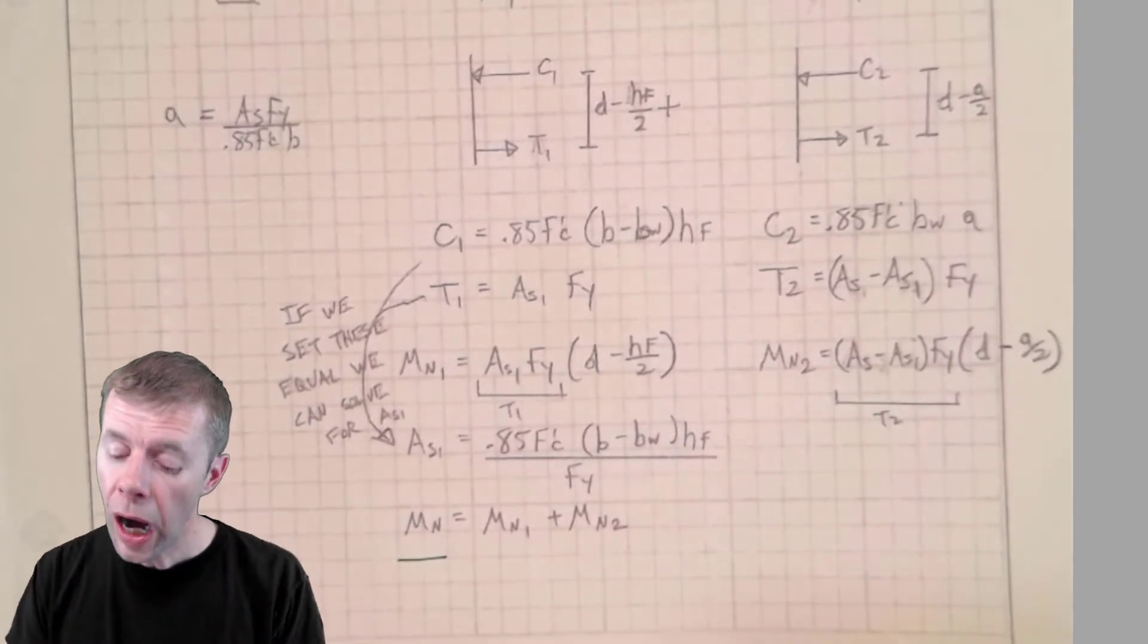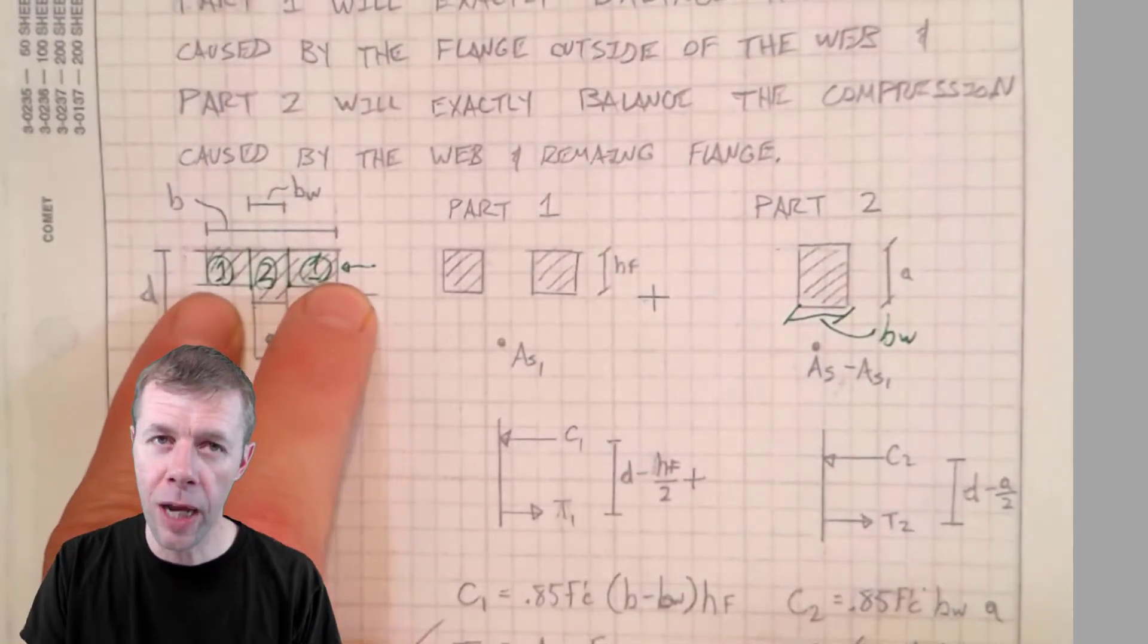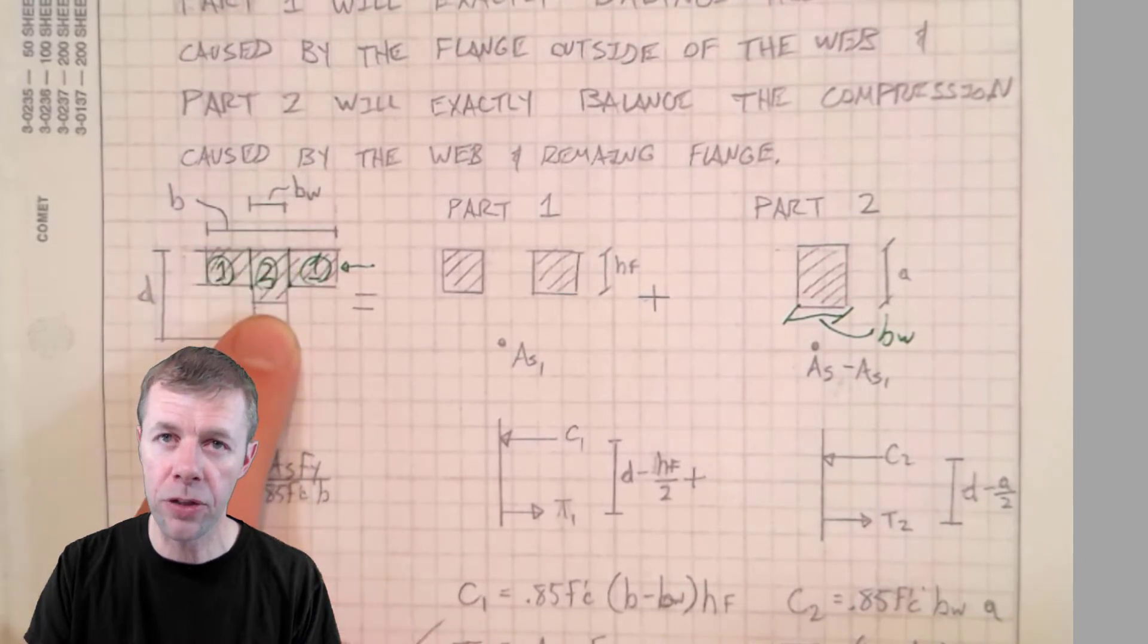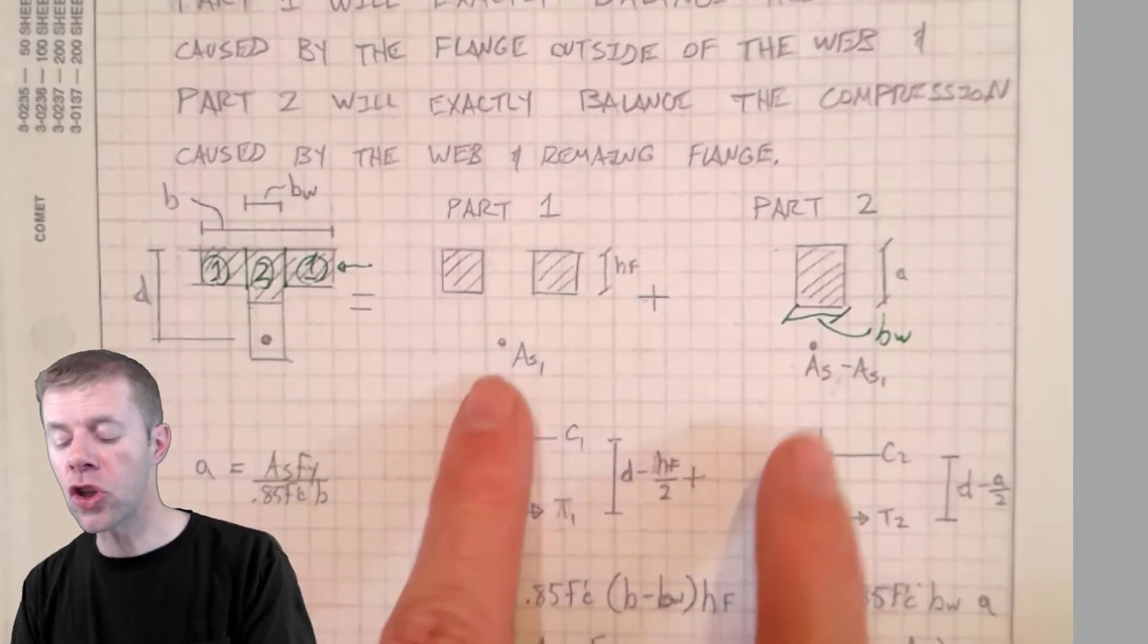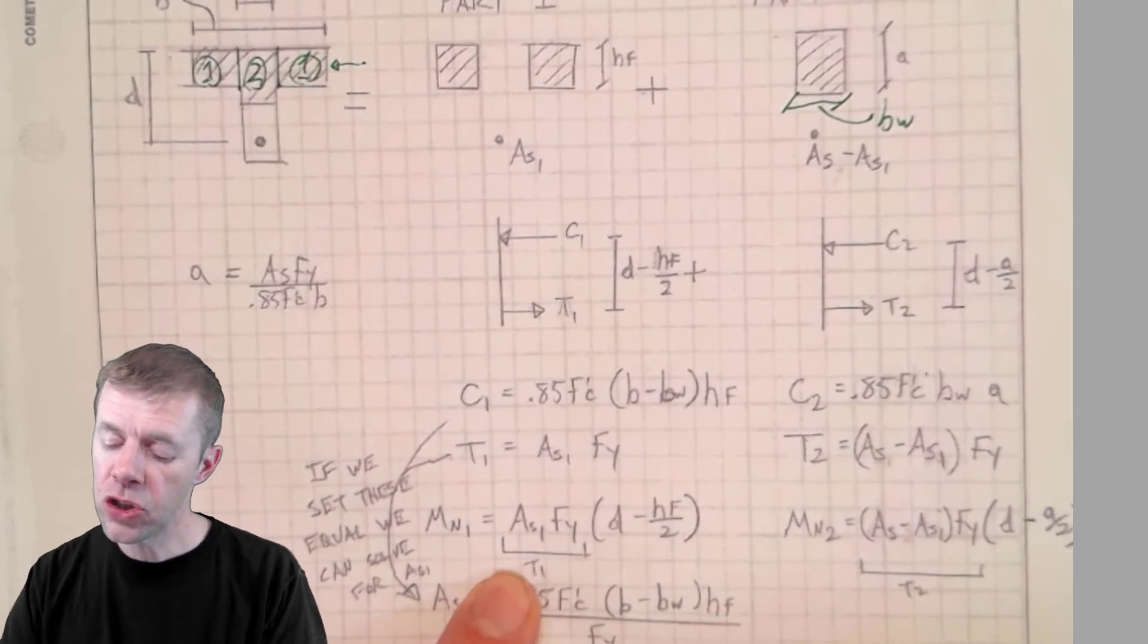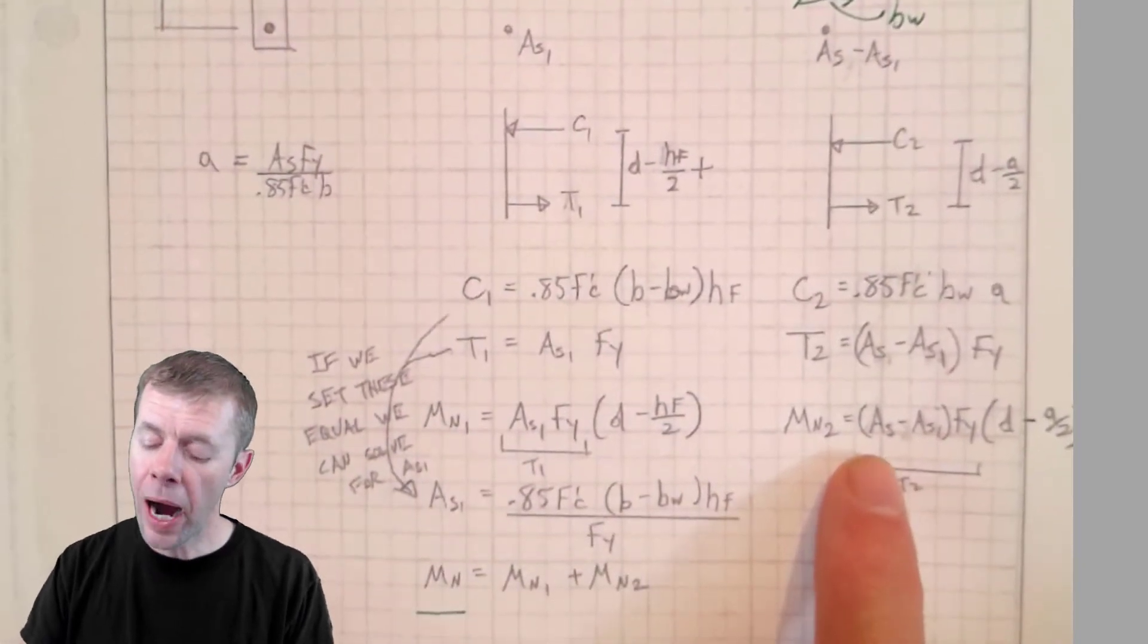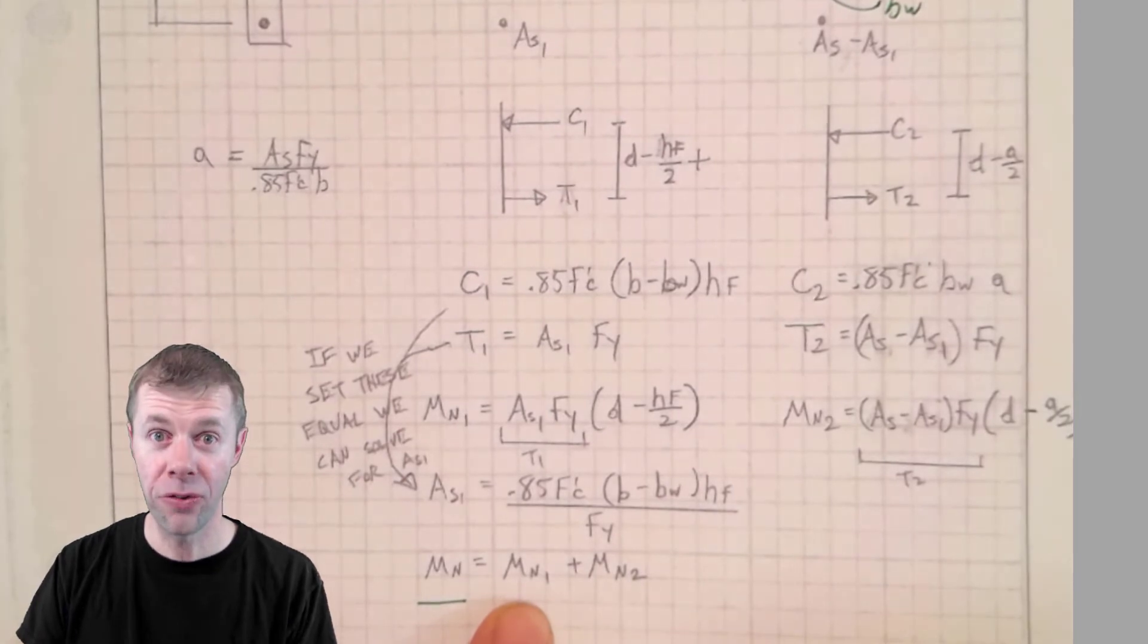So this just said in another way, this is only for case two. I'm going to break up my structure into two parts. Part one has the outside parts of the flange plus some of the steel. Part two has the remaining part of the flange, remaining part of the stuff that's in compression, plus the remaining amount of steel. I'm basically going to solve for the moment that this gives me. And I get this. And then I'm going to solve for the moment that this gives me. And I get this. Then I'm going to combine them together to get my total moments. How awesome is that?